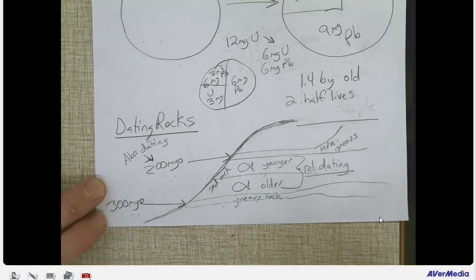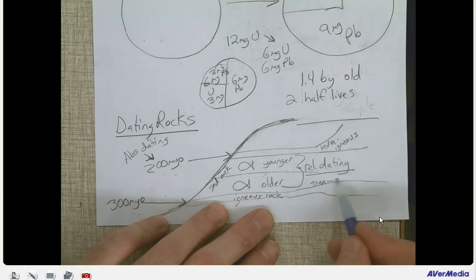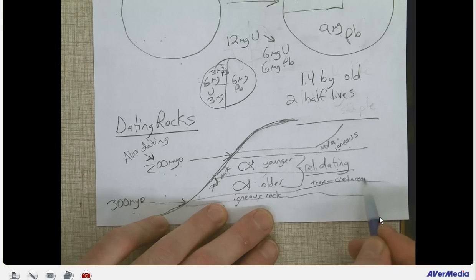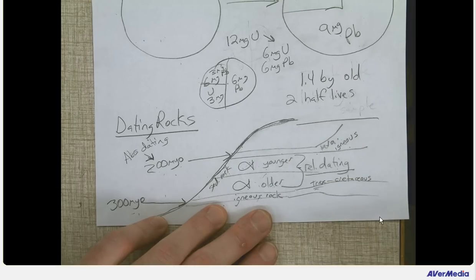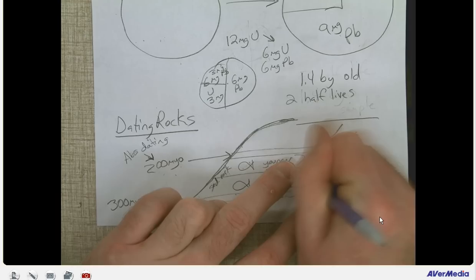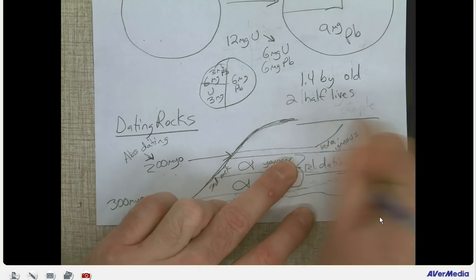Sometimes we also use index fossils. If we find a T-Rex fossil, we know T-Rex lived during the Cretaceous period — which was closer to the present, not 200 million years ago — so that knowledge helps us interpret and date new fossils found alongside it.